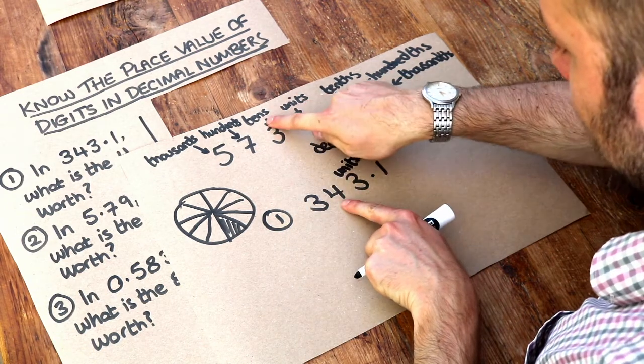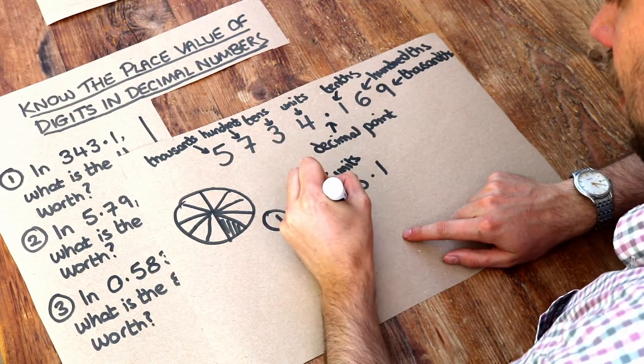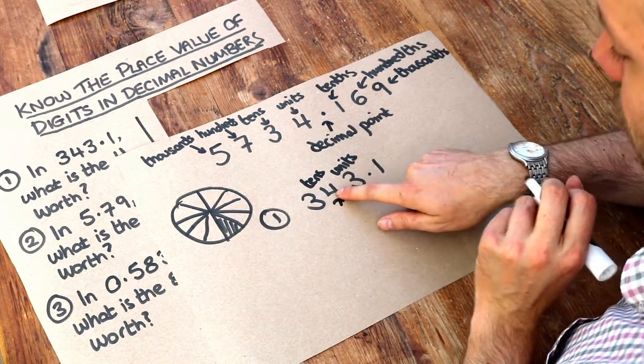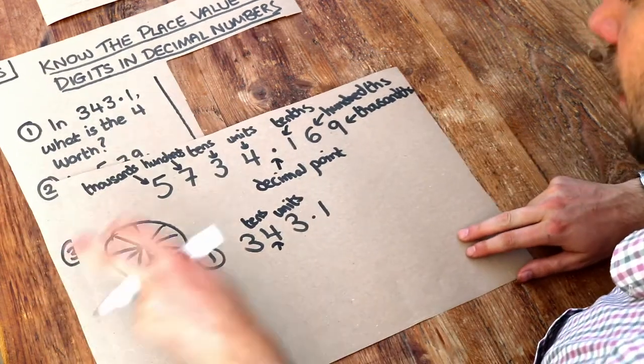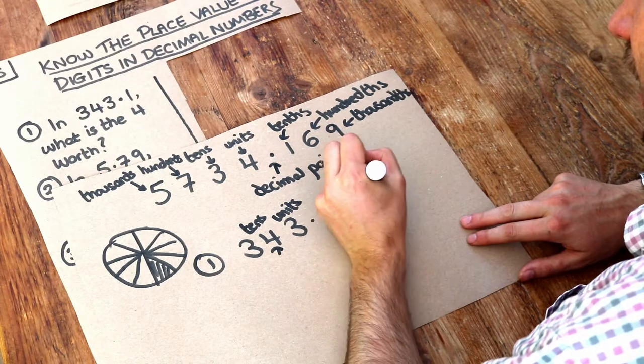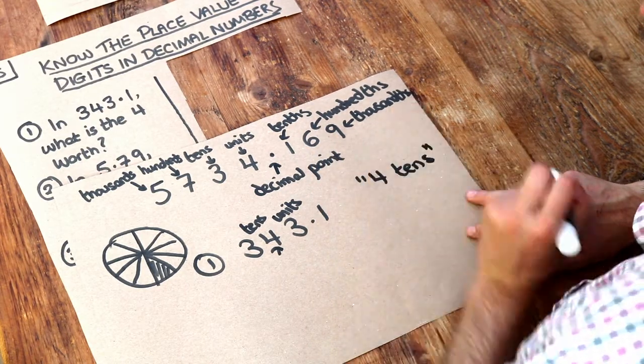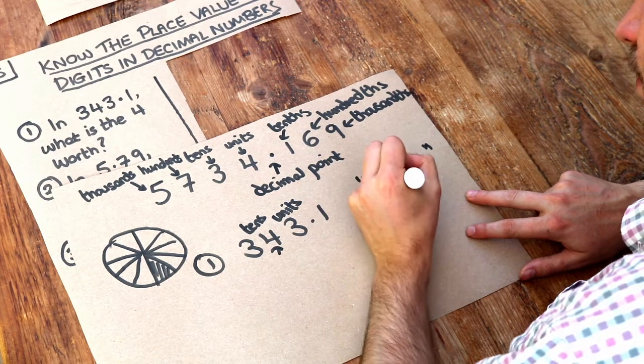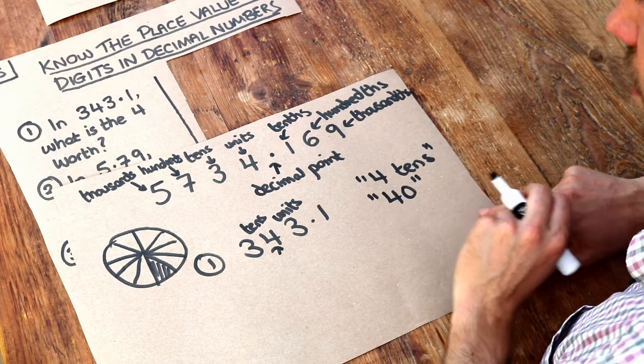To the left of that we've got the tens digit, and that's the one we're interested in—this four here. So that's worth four tens. We can write the answer as four tens, or we can write 40, because that's what four tens are. Four times ten is 40.